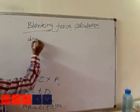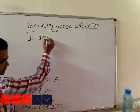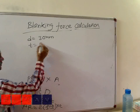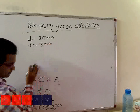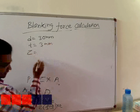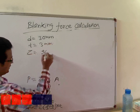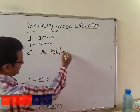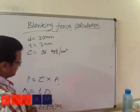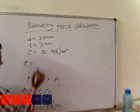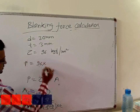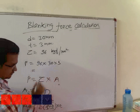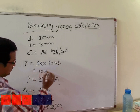Let's take an example. If the diameter of a circle is 30 mm, thickness is 3 mm, and tau is 96 kgf per mm², then calculating P would be 96 × 30 × 3, which gives us 10.2 tons.